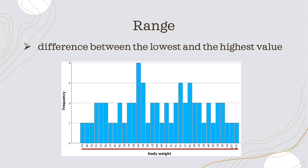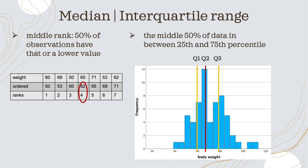Next I want to show the median and the interquartile range. The median is another measure of central tendency — it shows us the middle rank. I have put a little table here where the values are measures of body weight.